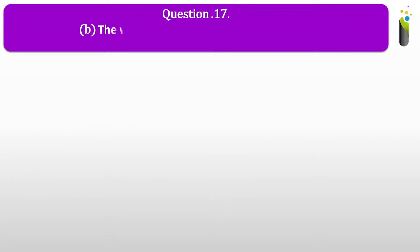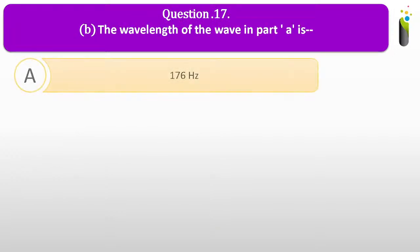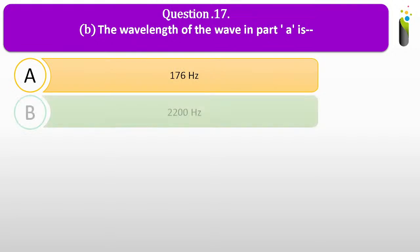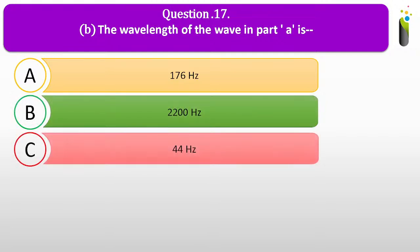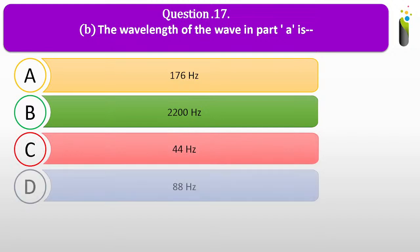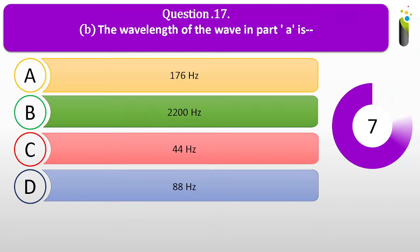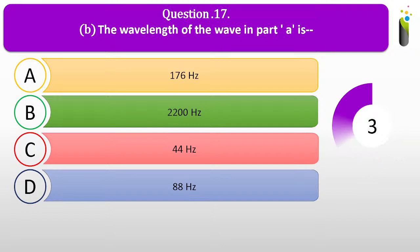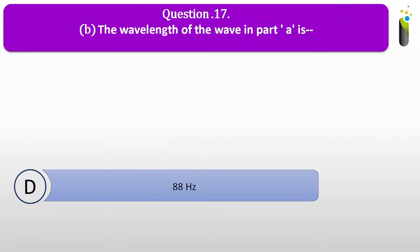Coming to question seventeen B. The wavelength of the wave in part A is dash. Options: A, 176 m; B, 2200 m; C, 44 m; D, 88 m. The correct answer is 88 m.